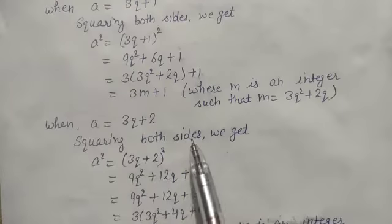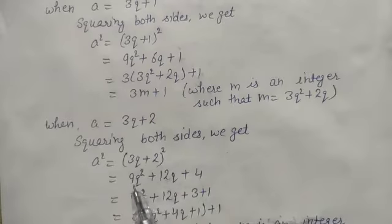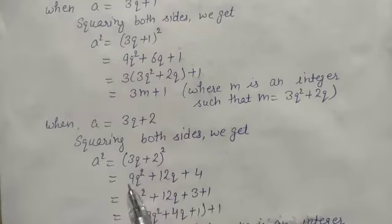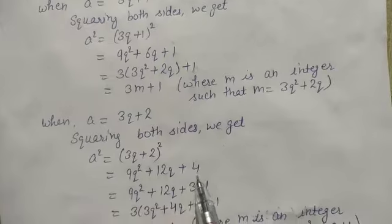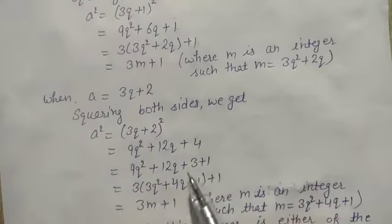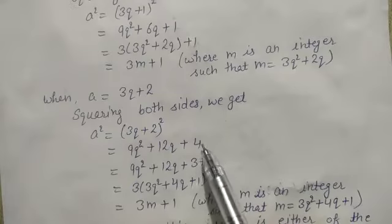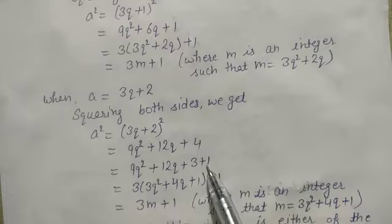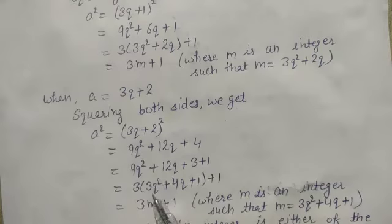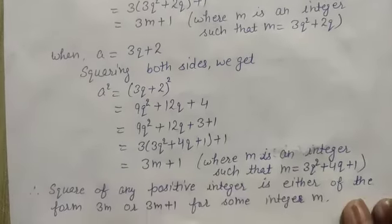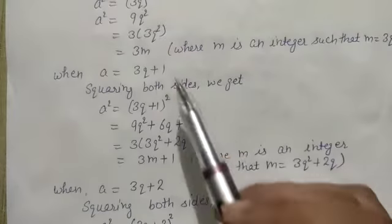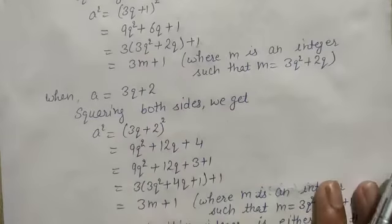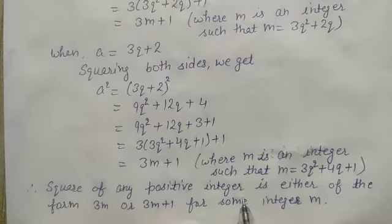When a equals to 3q+2, squaring both sides: a² equals (3q+2)² equals 9q²+12q+4. We break 4 as 3+1, then taking 3 common: 3(3q²+4q+1)+1. Putting 3q²+4q+1 equals m, where m is an integer, we get a² equals 3m+1. Therefore the square of any positive integer is either of the form 3m or 3m+1 for some integer m.